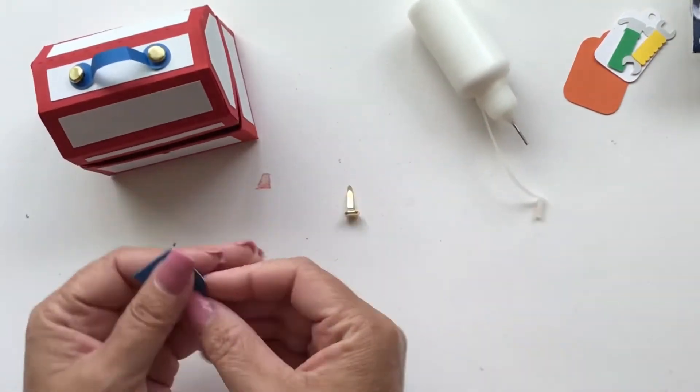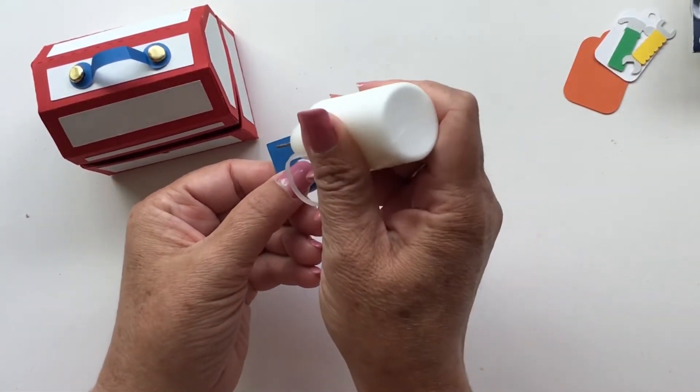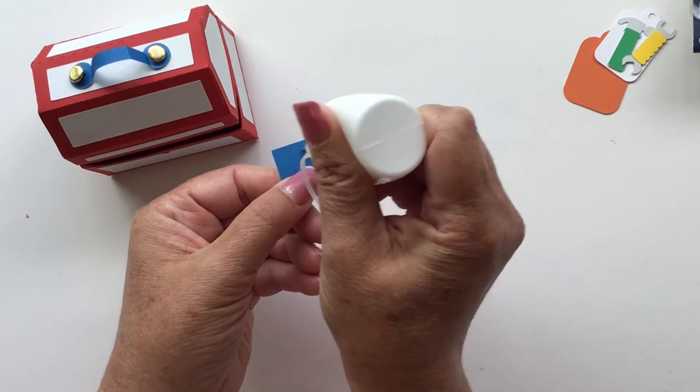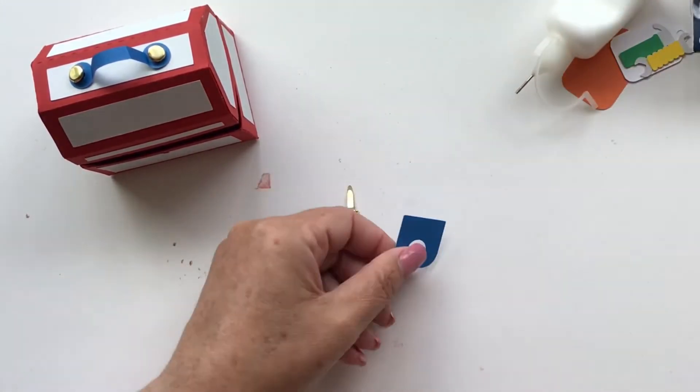And then the last one is we're going to put this little latch on here. So I'm just going to put some glue right here on the top of my latch. All right, let's do the tape runner.